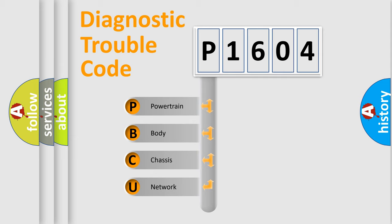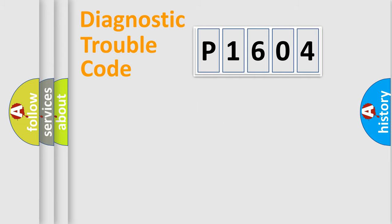We divide the electric system of automobile into four basic units: Powertrain, body, chassis, network. This distribution is defined in the first character code.